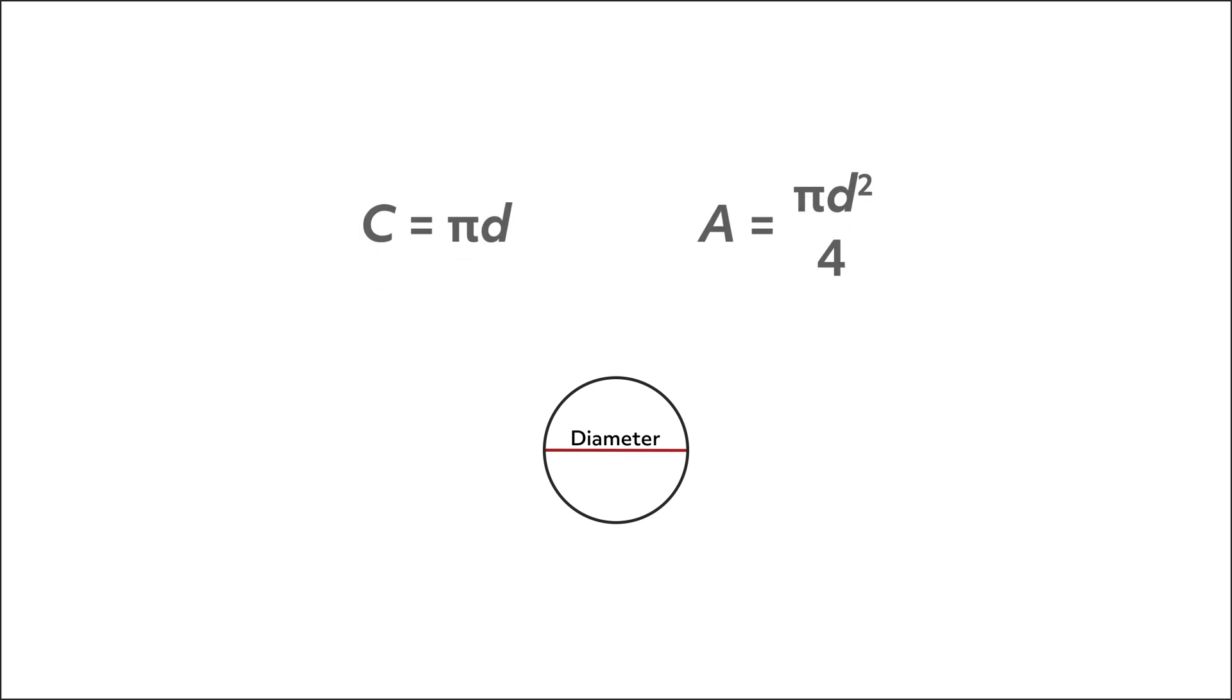In fact, there are versions of the circumference and area formulas that use the diameter instead of the radius. In practice, this area formula isn't used as often as the radius formula, but it does work. When we solve a problem where the diameter is known, we usually just divide the diameter by 2 to find the radius, and then use the radius formulas.